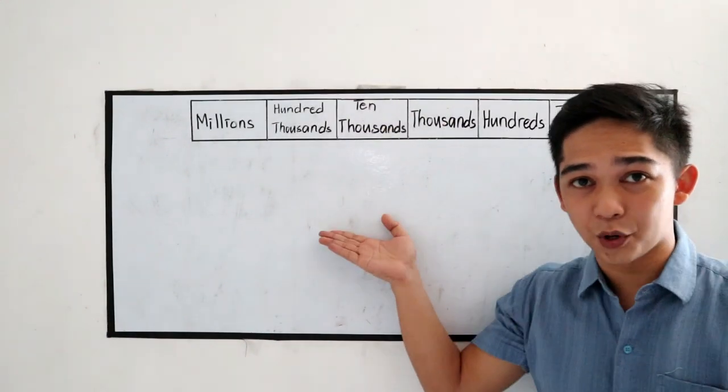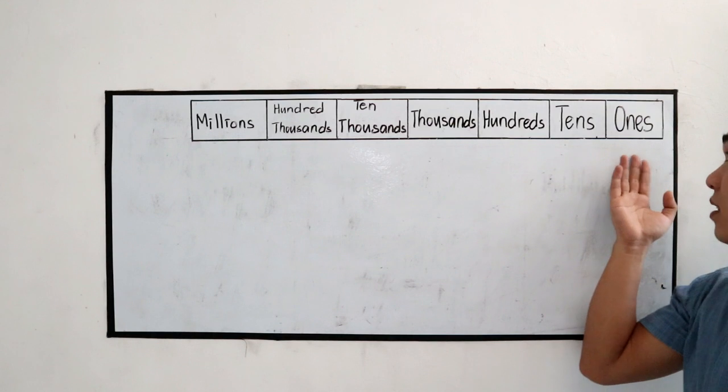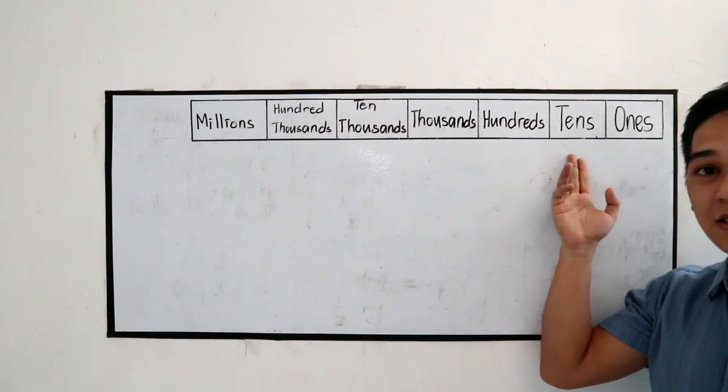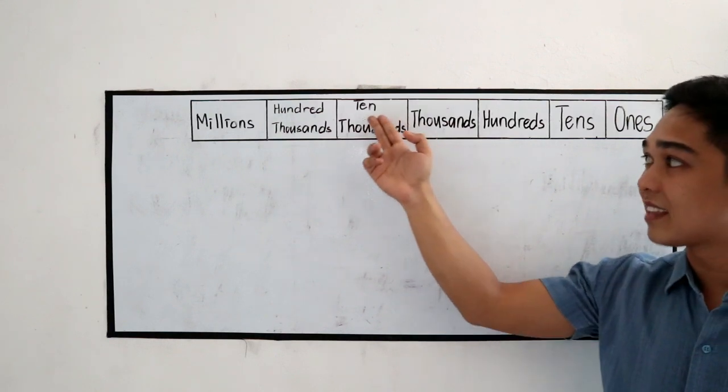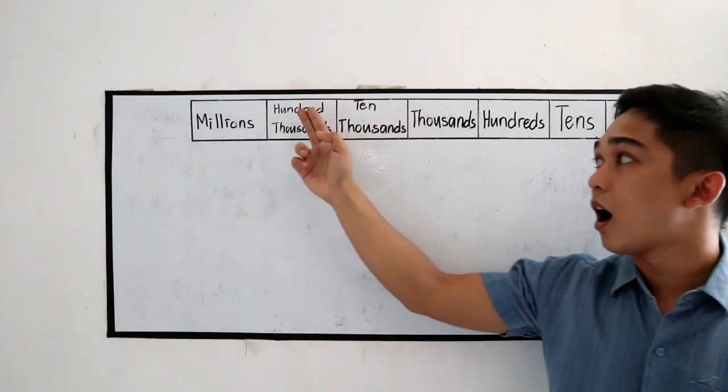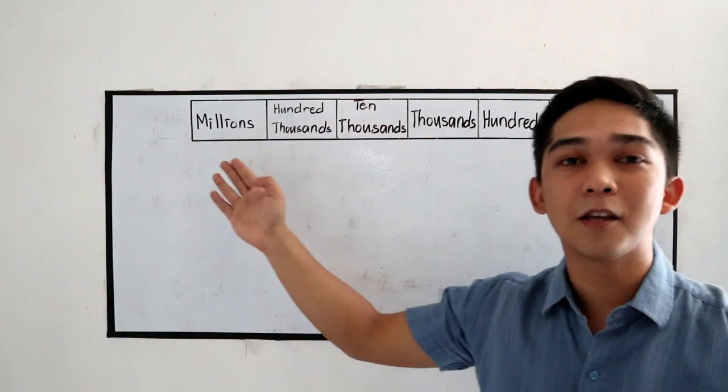Here in the whiteboard, we have the ones, tens, hundreds, thousands, ten thousands, hundred thousands, and millions.